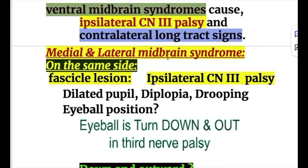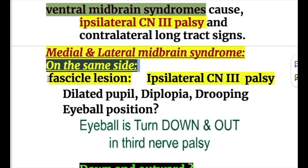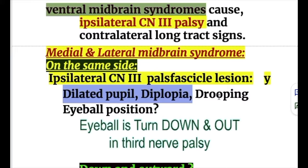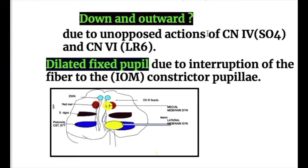The medial and lateral midbrain syndromes share the same ipsilateral features. A fascicular lesion causes ipsilateral oculomotor nerve palsy, including dilated pupil, diplopia, and drooping of the eyelids due to involvement of the levator palpebrae superioris muscle. The eyeball in ventral midbrain syndromes is turned down and out due to the unopposed action of the superior oblique — supplied by the trochlear nerve — and the lateral rectus muscle, supplied by the abducens nerve.